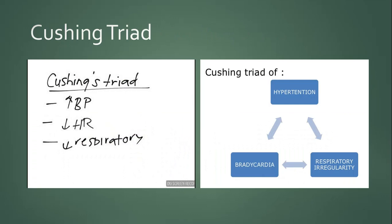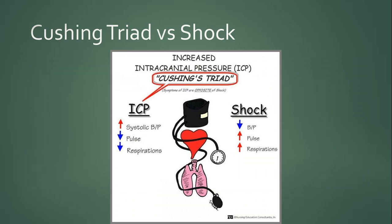The Cushing triad consists of increased blood pressure (hypertension), decreased heart rate (bradycardia), and altered or decreased respiratory rate. It is important to differentiate the Cushing triad from shock: in the Cushing triad, blood pressure is increased, pulse is decreased, and respiration is decreased, whereas in shock, blood pressure is decreased, pulse is increased, and respiration is increased.